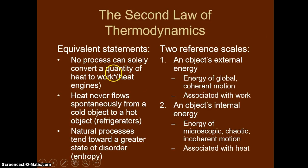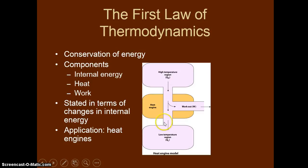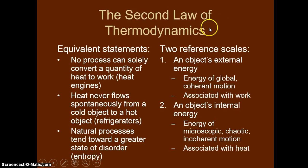The second law of thermodynamics, which we've talked about before, is that heat never flows from a cold object to a hot object on its own. You can force heat to go that way — that's what refrigerators do — but you have to put work into the device and engineer it correctly. This is also what air conditioning does: it cools your home on a hot summer day.